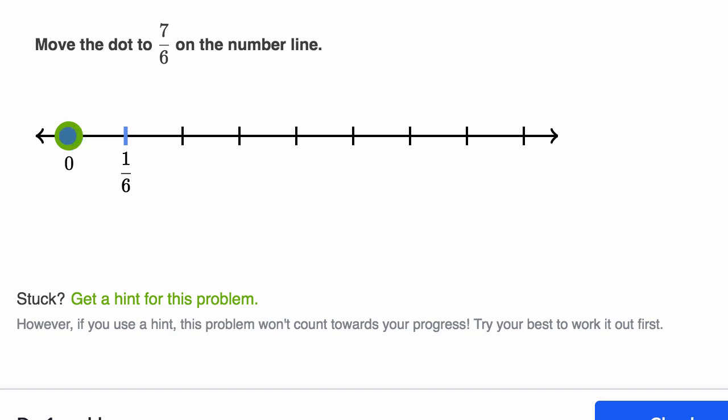So what they're saying is from zero to this point on the number line right over there, that gets us to 1 sixth. So each of these spaces are a sixth. So we go 0, 1 sixth, 2 sixths, 3 sixths, 4 sixths, 5 sixths, 6 sixths, 7 sixths.